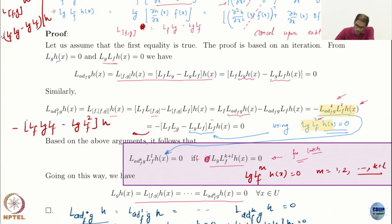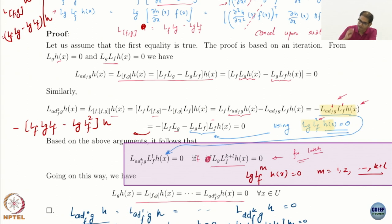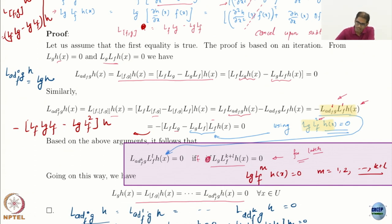What have we shown essentially? We used Lg h = 0, Lg Lf h = 0, and Lg Lf² h = 0, and we obtained L_{ad_f^0 g} h = 0 — which is just Lg h = 0 — and we proved L_{ad_f g} h = 0 and L_{ad_f² g} h = 0. We used three equalities from the first condition to prove three equalities in the second.